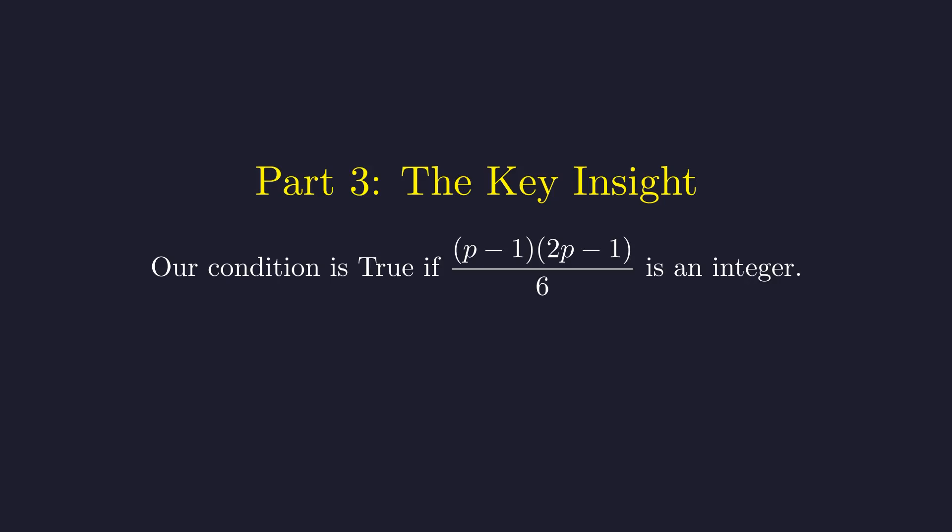Now we arrive at the critical point in our analysis. We need to determine when the remaining fraction is an integer. After factoring out p, our condition becomes: when is this fraction an integer? If we can prove it's always an integer, then p divides our sum for any value of n.